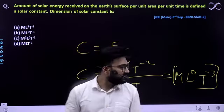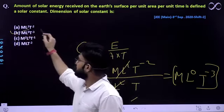Dekhte hai option kaun sa hai? M, L⁰ and T⁻³. So, B would be the correct option.